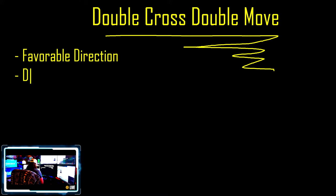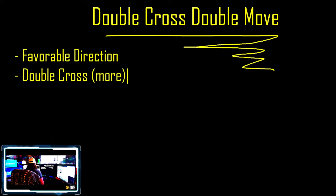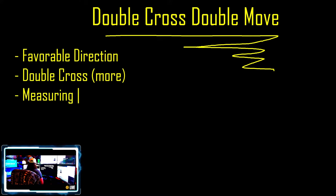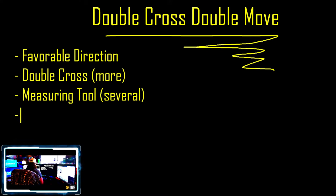What we're going to see is the obvious double cross — it can be more than two, and I'll show you guys an example of that. We need a measuring tool, and there are several to choose from. I'll show you guys that, and then we are looking for targets and stops.